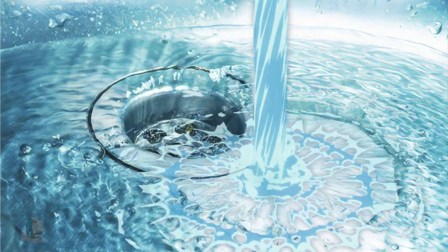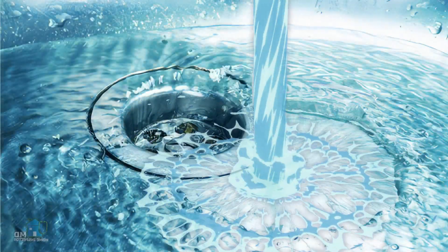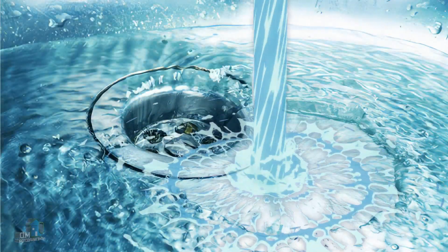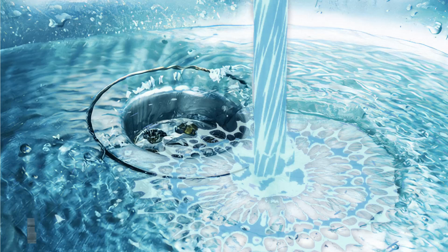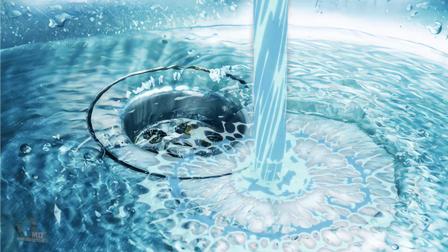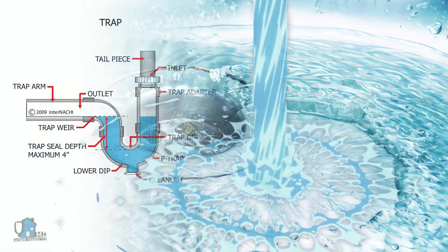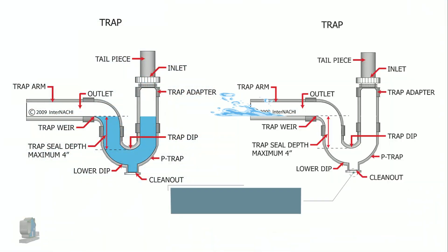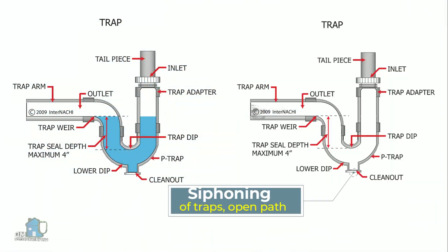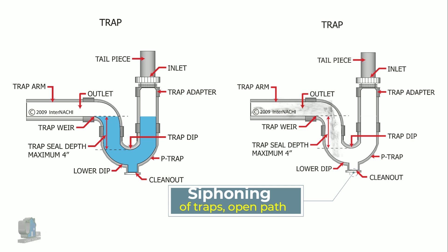These air vents provide several functions needed for proper and safe waste flow. First: siphoning of traps. There are traps for your faucets because they trap a small amount of water to prevent sewer gases from entering your home.